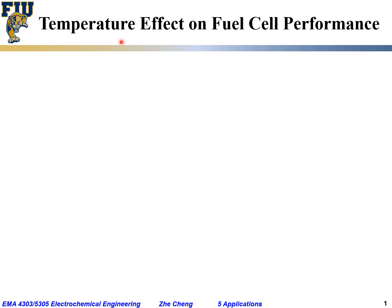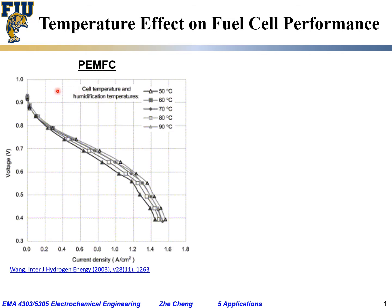One thing to call your attention to is the temperature effect on fuel cell performance. Depending on the type of fuel cell, the temperature may have a small effect or a very large effect. First, let's look at the PEM fuel cell — polymer electrolyte membrane fuel cell, or proton exchange membrane fuel cell — quite often used for automobile applications. Here we show the change of voltage versus current density, the JV curve, for this PEM fuel cell.